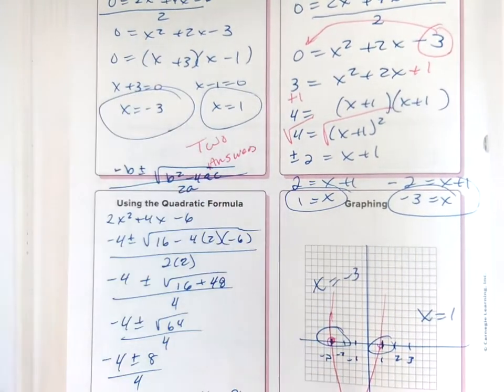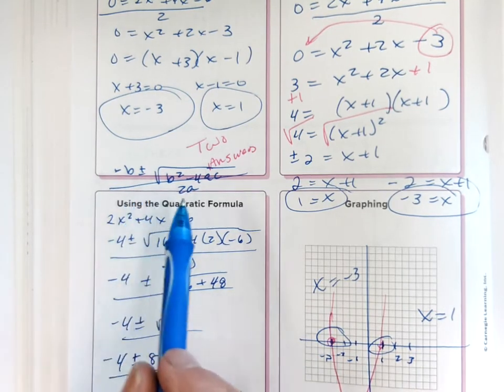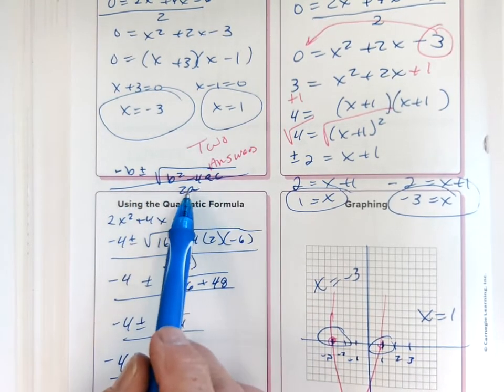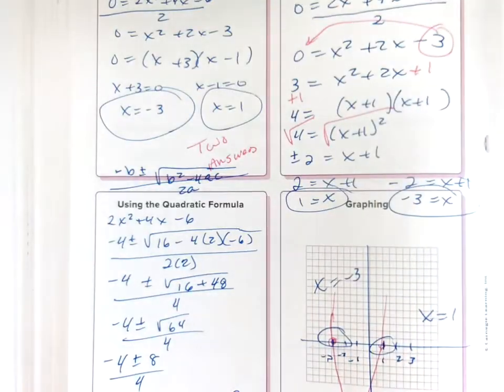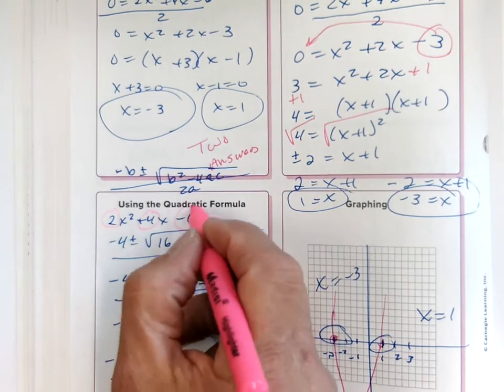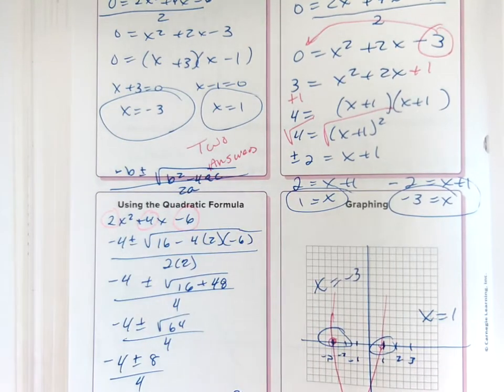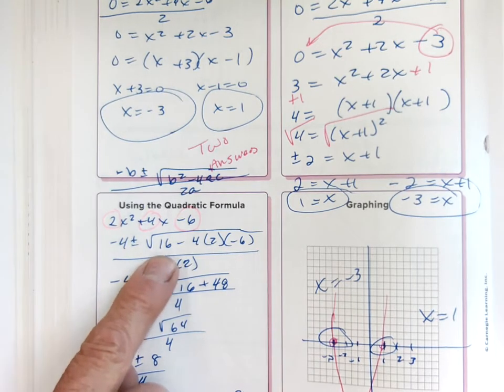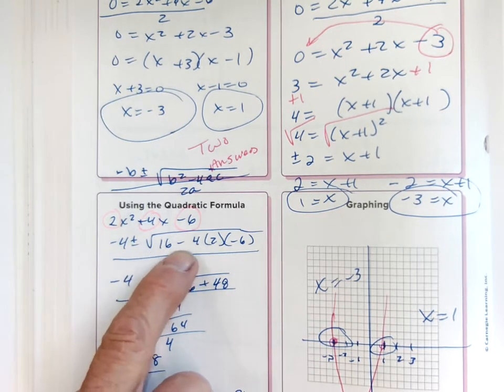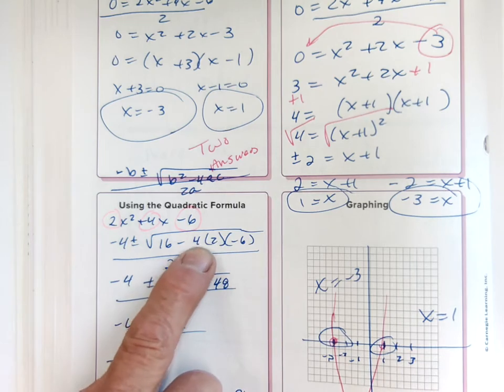But let's say you don't know how to factor. The quadratic formula is: x = (-b ± √(b² - 4ac)) / 2a. In this case, a = 2, b = 4, c = -6. So I go: -b is -4, plus/minus √(b²) where b² = 16, minus 4 (that's in the formula), times a, times c...